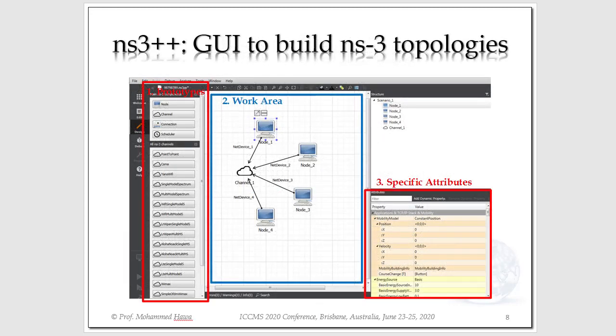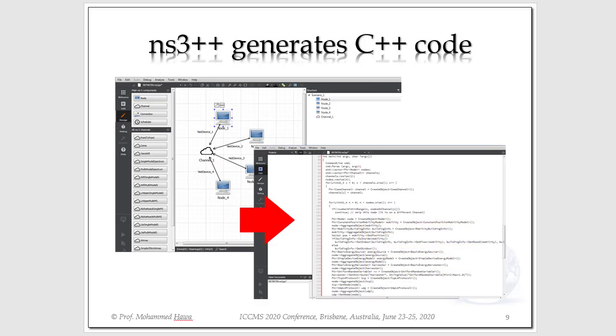Here, we see a quick overview of the plugin running within Qt Creator. We see three areas. We have a prototypes area, and then the work area, and the attributes area. You drag and drop different NS3 components here to build your scenario. And then, if you select one of those components, you can change the attributes for that component. Once you create your networking topology, you can ask NS3++ to convert that into C++ code compatible with NS3. You don't have to write the code yourself.